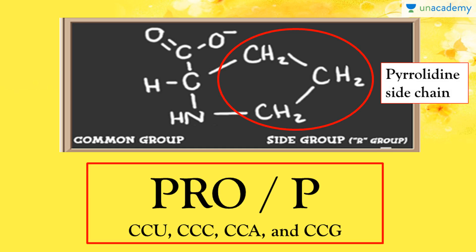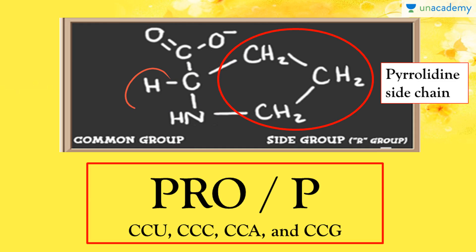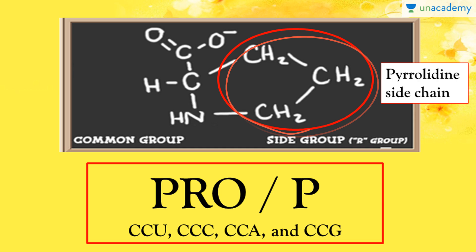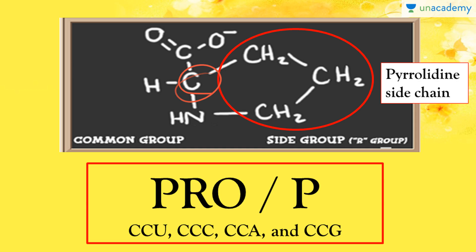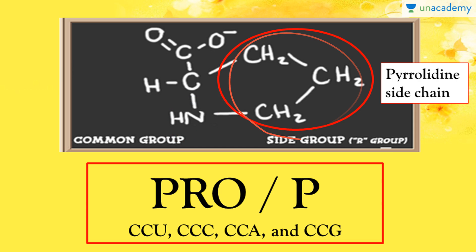Now, talking about the chemical structure of proline: there is an alpha carbon atom attached to four different groups — the alpha carboxylic group, the alpha amino group, and one hydrogen atom. But the side chain of proline is somewhat different from other amino acids, in that the side chain is attached to two groups. In all other amino acids, side chains are only attached to the alpha carbon atom, but in proline the side chain is attached to both the alpha carbon atom and the alpha amino group. This makes proline unique amongst all 19 other amino acids.